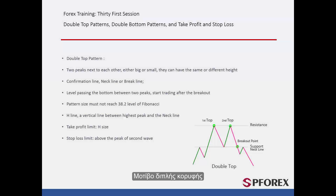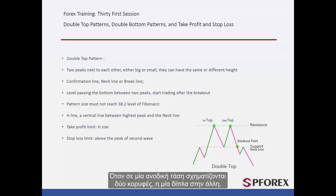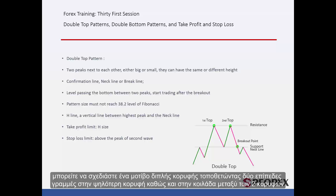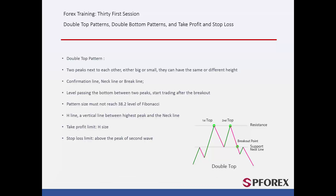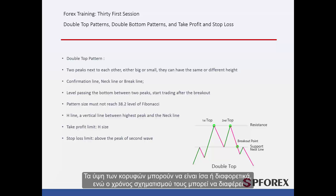Double Top Pattern: When two peaks on an uptrend are formed next to each other, a double top pattern can be drawn by placing two level lines on the highest peak, in addition to the valley between two peaks. The height of peaks can be equal or different, while their forming time may differ.